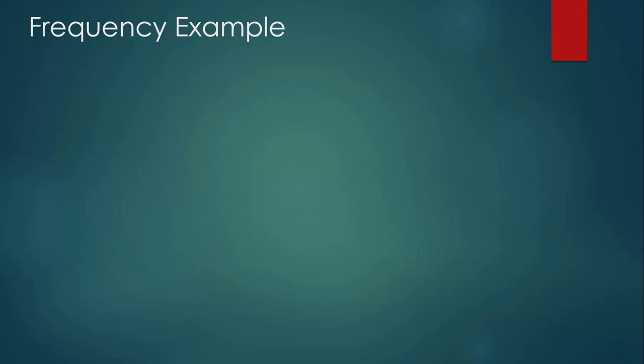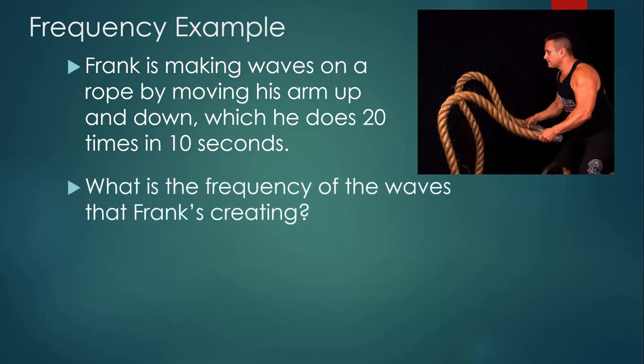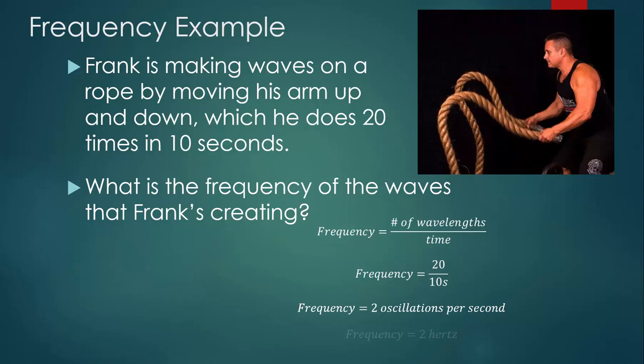Let's take a look at an example of a problem involving frequency. So here's Frank, and he's making waves on a rope by moving his arm up and down, which he does 20 times in 10 seconds. So we want to figure out what are the frequency of the waves that he's making. Frequency is the number of wavelengths that are created divided by time. We can see from the description that he's creating 20 wavelengths. That's 20 oscillations every 10 seconds. So we have 20 divided by 10 seconds. Notice the 20 doesn't have any units. We counted to 20. 20 divided by 10 seconds gives us a frequency of two oscillations per second. And if we want to put our new unit on there, we can call that two hertz.